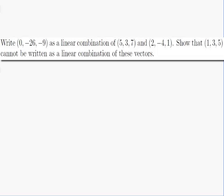The question is, write (0, -26, -9) as a linear combination of (5, 3, 7) and (2, -4, 1). Show that (1, 3, 5) cannot be written as a linear combination of these vectors.